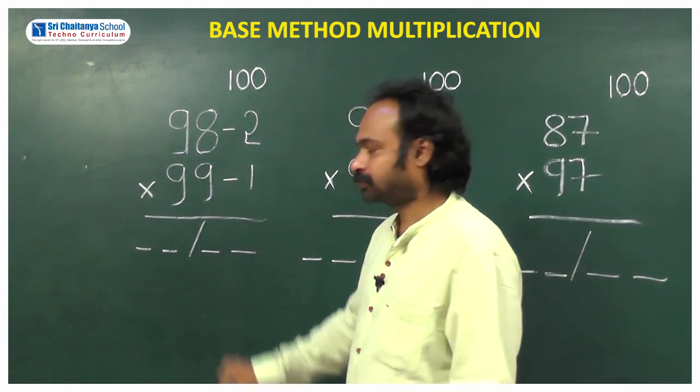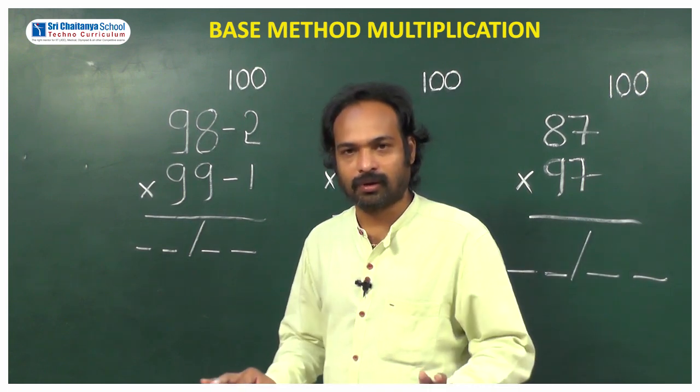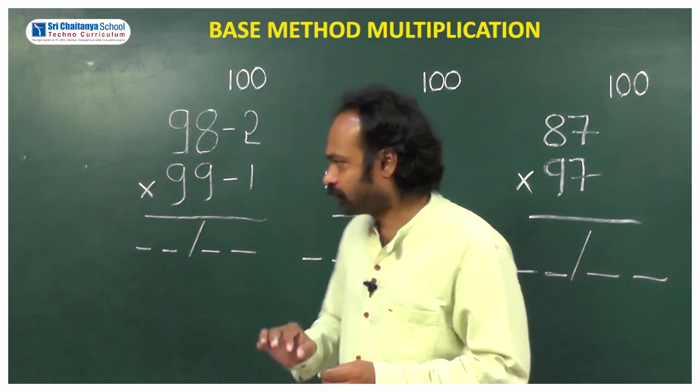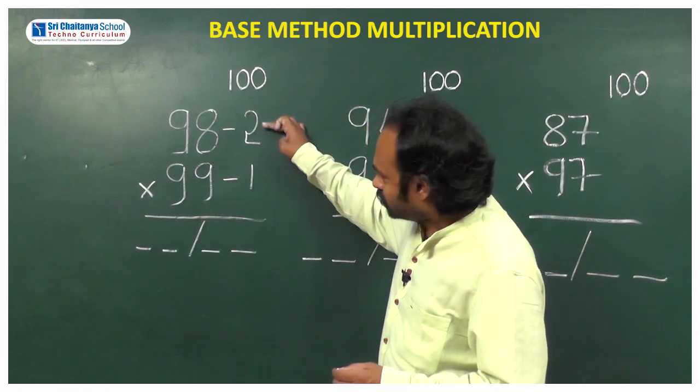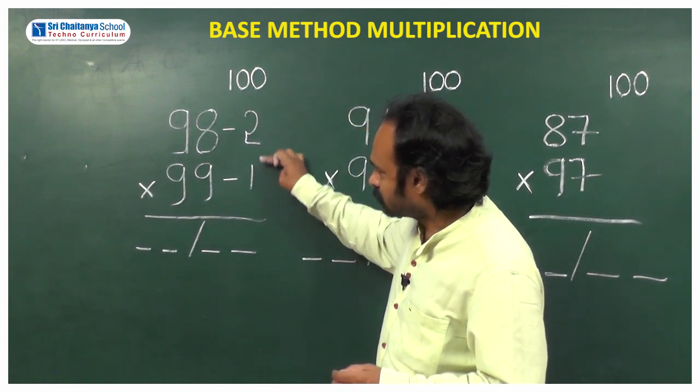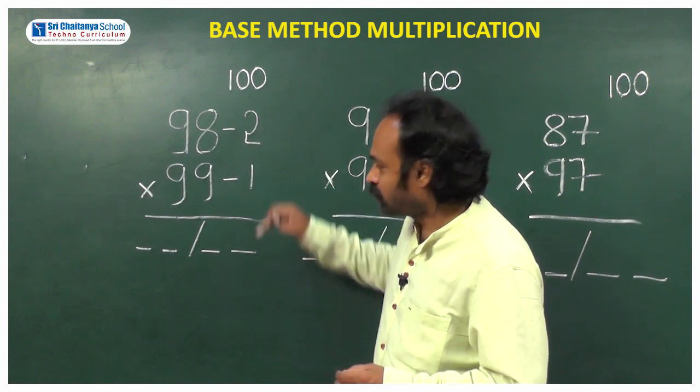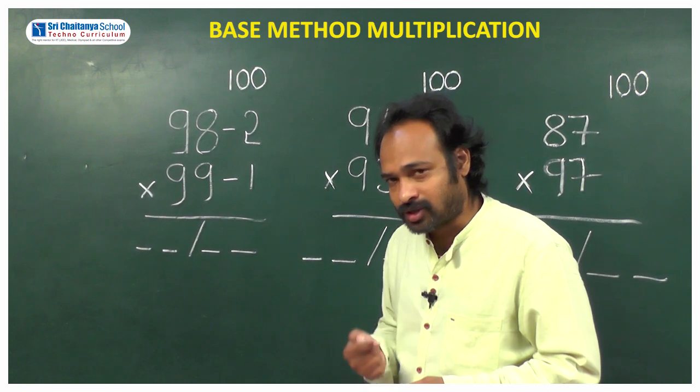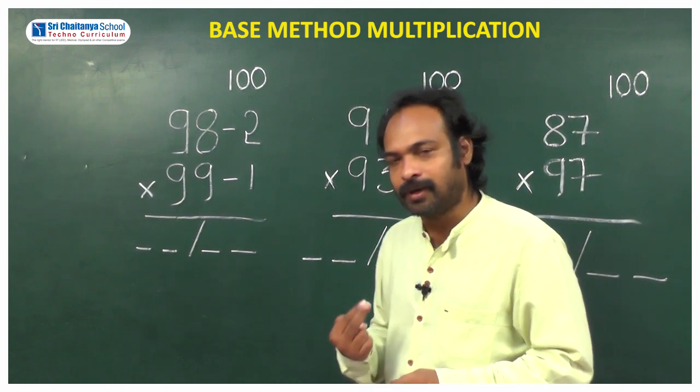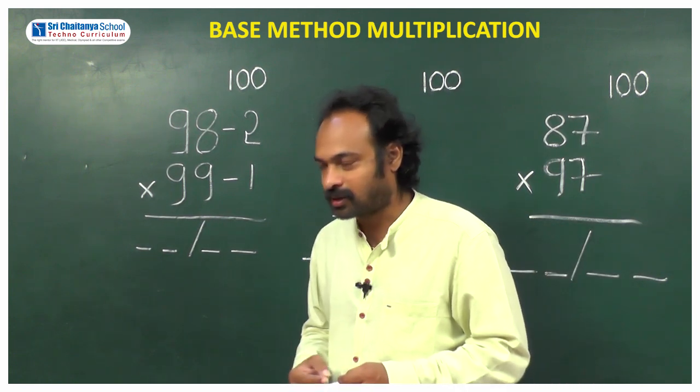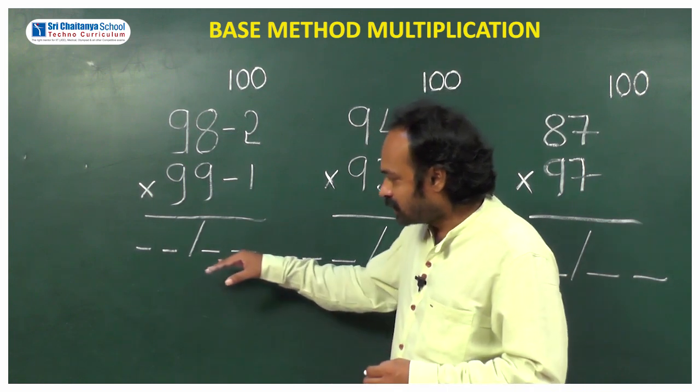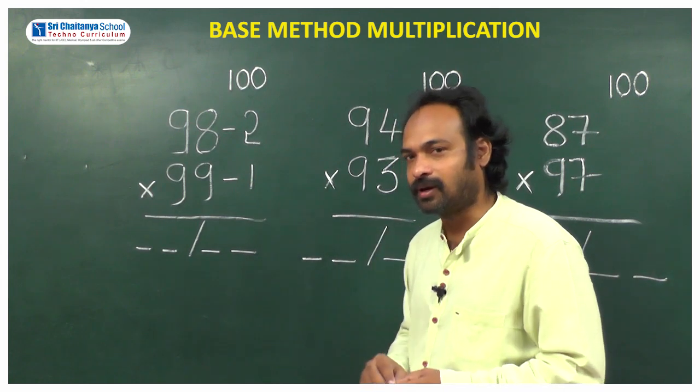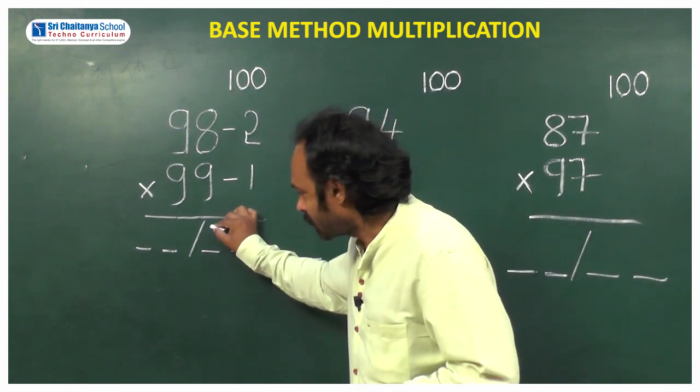That's it, the process is over. Now you have to do small adjustments. First you need to take the product of these two numbers: 2 into 1, how much? 2. It's a single digit number, whereas here we have to write a two digit number. As 2 is a single digit number, you will write the 2 as 02.